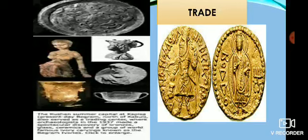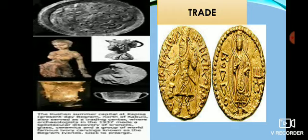During the reign of Kanishka, trade flourished. He had harmonious trade relations with West Asia. Takshila, Mathura and Ujjain were important trading centers. A large number of gold, silver and copper coins were issued by the Indo-Greeks and the Kushans, which encouraged trade. Kanishka established the Silk Route, which connected the East and the West — from China across Central Asia to the West Asian provinces of the Roman Empire. Through this route India exported pearls, silk, ivory, precious stones, glass, copper, tin and gold.